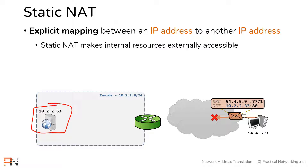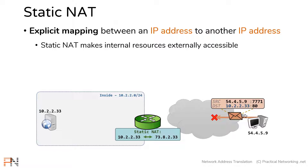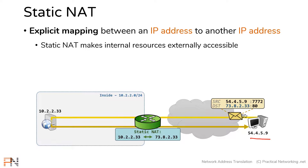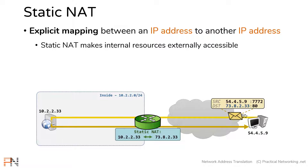However, if I have a resource on my inside network that I want accessible externally, I would have to configure my router with a static translation. In this example, I have configured my router to translate the IP address 10.2.2.33 to the IP address 7.3.8.2.33. Now my external host can shoot a packet to the external IP address of 7.3.8.2.33, and this will allow the packet to cross the internet, reach the router, reach my internal resource, and my internal resource can respond.